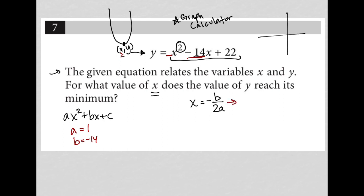I'd have negative b, which becomes positive 14, over 2a, but a is 1, so it doesn't change anything. So we have 14 divided by 2, which is 7. So the answer to this question is 7.